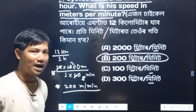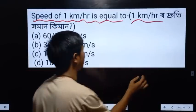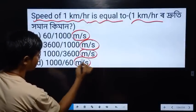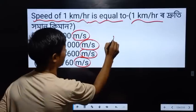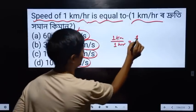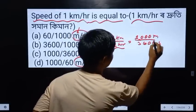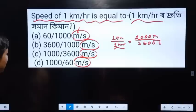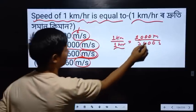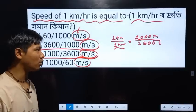Speed of one kilometer per hour is equal to what in meters per second? One kilometer per hour equals 1000 meters divided by 3600 seconds — giving meters per second.